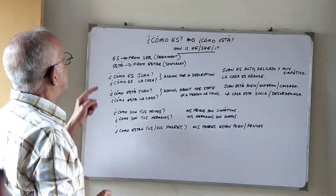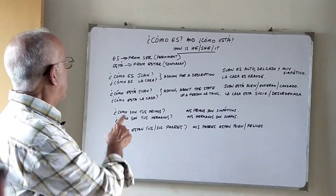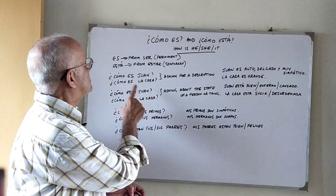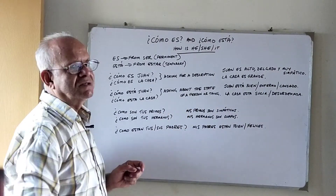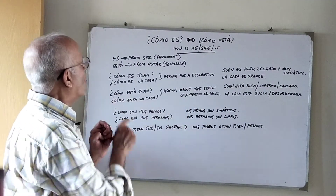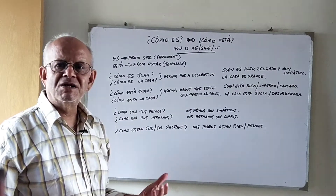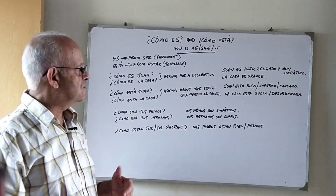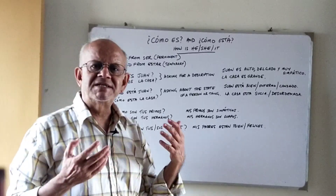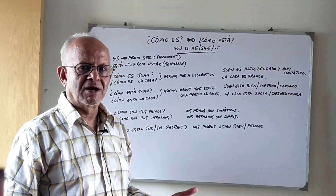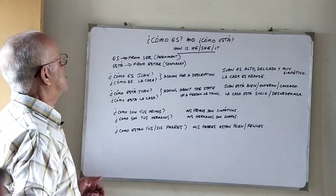Now the same questions with the verb Estar: Cómo está Juan? and Cómo está la casa? This is a temporary situation — we are asking about the state or condition of a person or a thing. Cómo está Juan? asks about the condition Juan is in, which is a temporary situation. Cómo está la casa? asks about the condition of the house, also a temporary situation.